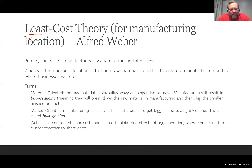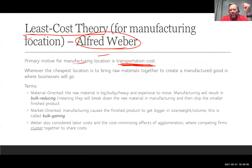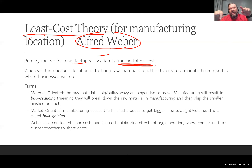The last major concept is the least cost theory, developed by Alfred Weber. He tried to figure out why companies locate manufacturing where they do, and concluded much of it comes down to transportation costs. Companies will locate where it is cheapest to produce — bringing raw materials in and sending finished products out to market at minimum cost.